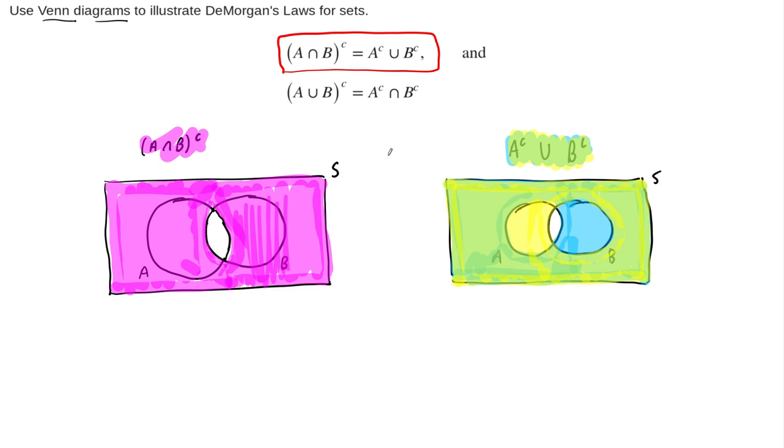And so this is a Venn diagram proof, I guess you could call it. It's more of, we'll call it a justification. Proof is going to be a stronger word for us moving forward in this class. But a justification using Venn diagrams that these two sets are equal to each other. So at this point, after you turn off this video, once it ends, you should write down on your paper the same exact thing that we've just done here, shade in both sides of this and make sure that you get the same picture for each one.